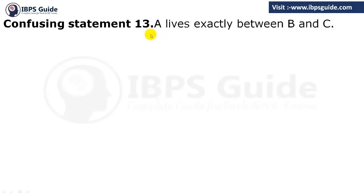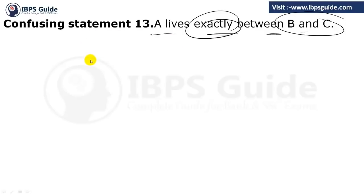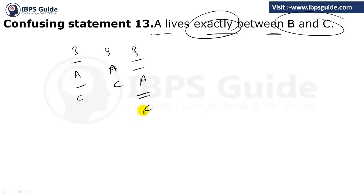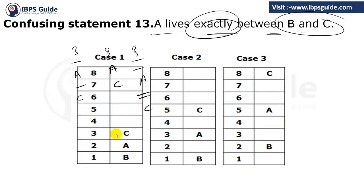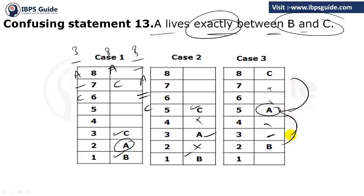The thirteenth statement: A lives exactly between B and C. The word 'exactly' means the space between B and A, and between C and A, must be equal. If B is here and C is here, leaving one space on each side, A can be here. Or leaving two spaces on each side, A can be here. The distance or space between B and A must be equal to the distance between A and C.